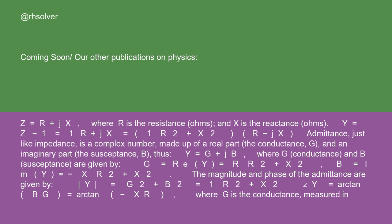Admittance, just like impedance, is a complex number made up of a real part, the conductance G, and an imaginary part, the susceptance B.